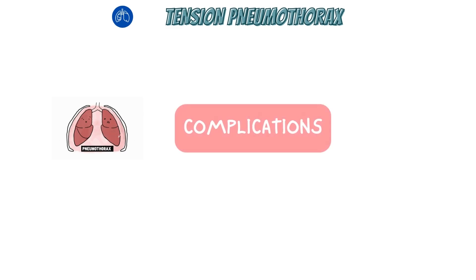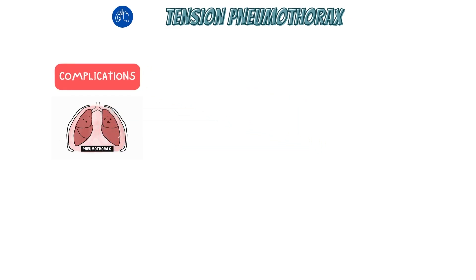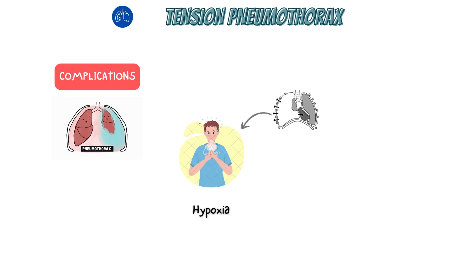So what are the complications of this? The patient will nearly always be hypoxic because the tension pneumothorax will initially compress the lung on the affected side, before shifting the mediastinum to the contralateral side and causing compression there as well. As a result of the lungs being mechanically constricted and unable to function correctly, you experience substantial hypoxia.